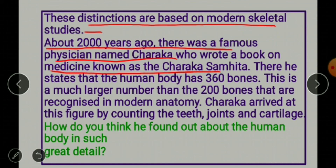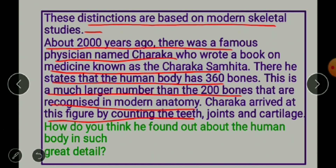In the Charak Samhita, Charak states that the human body has 360 bones — a much larger number than the 200 bones recognized in modern anatomy. Charak arrived at this figure by counting teeth, joints, and cartilage.